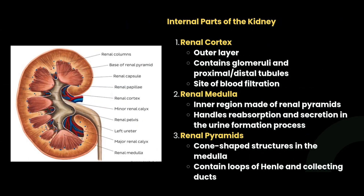Third is the cortex and medulla — the main tissue layers inside the kidney. The renal cortex is the outer layer; it contains glomeruli and proximal and distal tubules, and is the site of blood filtration. The renal medulla is the inner region of renal pyramids and handles reabsorption and secretion in the urine formation process.